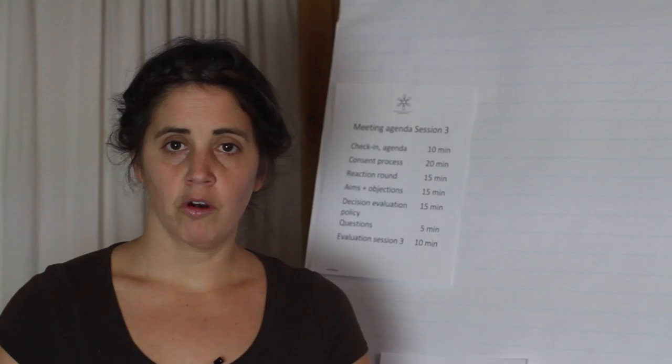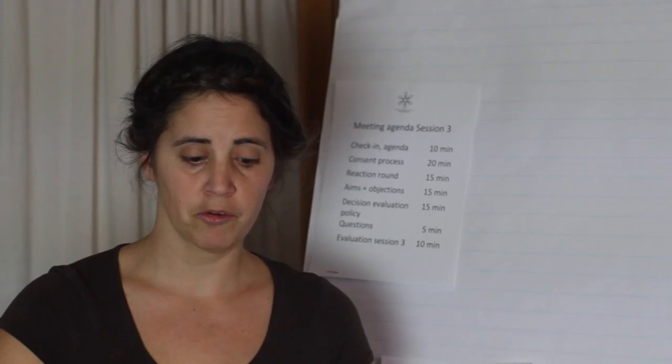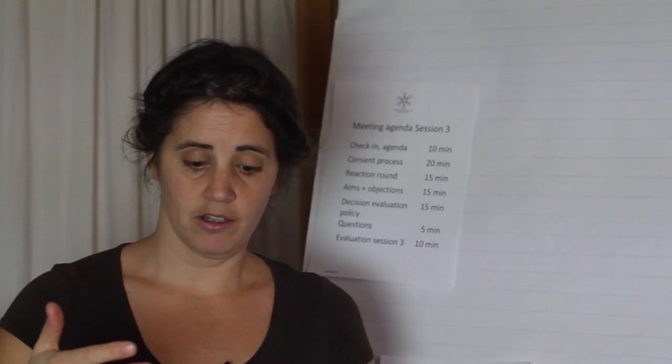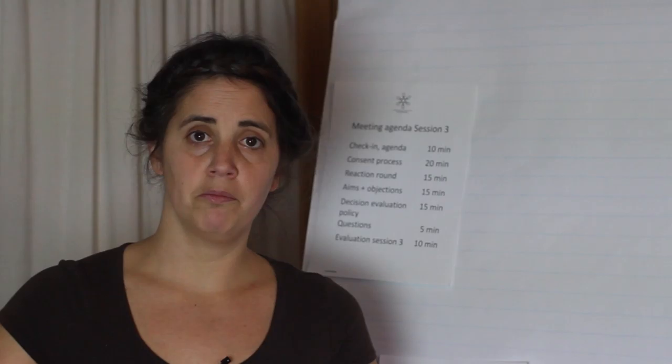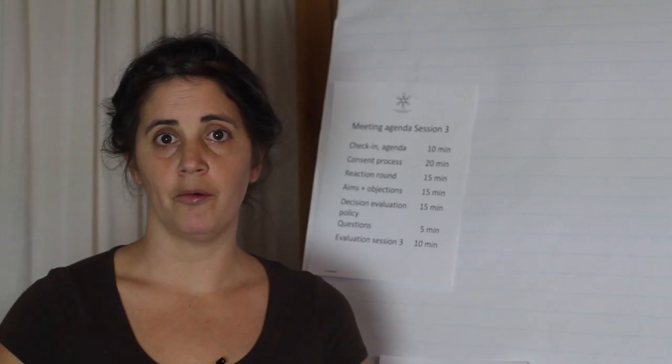Agenda. Here's my agenda proposal. My plan was to talk about the consent process. Last time we talked about how to get to a proposal, and this time we're gonna talk about how to make a decision on a proposal. You're gonna have some time to reflect on what I tell you. And then we're gonna talk about aims and objections, because those are important to understand if there are any objections in the consent process. You're gonna work on your own policy and consent to it, ideally. You're gonna have some time to ask questions and do your meeting evaluation. Now it's time for you to consent to your agenda or make changes that work for your group. Do that now.